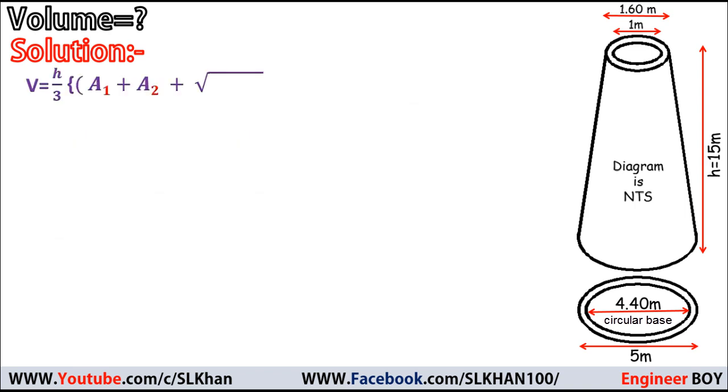So now we have a new formula for this approach. If we need to determine the volume of this hollow frustum, we use this formula. Here we need all of these: A₁, A₂, a₁, and a₂. These are also known as the top and bottom areas.